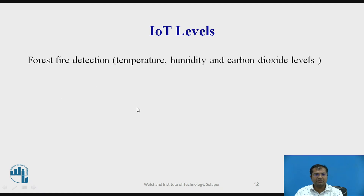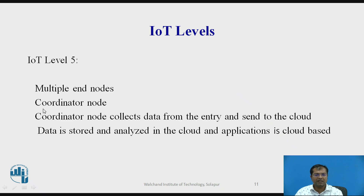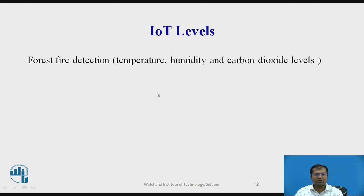The example for IoT level 5 is forest fire detection. In the forest, parameters such as temperature, humidity, and carbon dioxide levels are sensed and monitored. There will be a coordinator as well as multiple nodes. The coordinator collects data from different sensors kept in different locations, which deliver values related to temperature, humidity, carbon dioxide, etc.